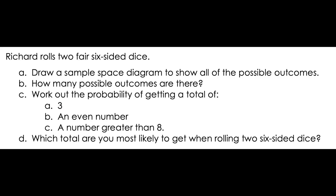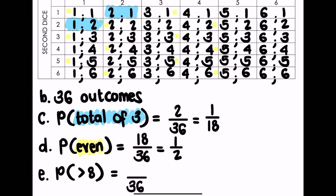The next question: what is the probability of a number greater than eight? The number can't be equal to eight. Looking at the first column — one and one is two, then three, four, five, six, seven — so there's no number equal to eight in the first column.